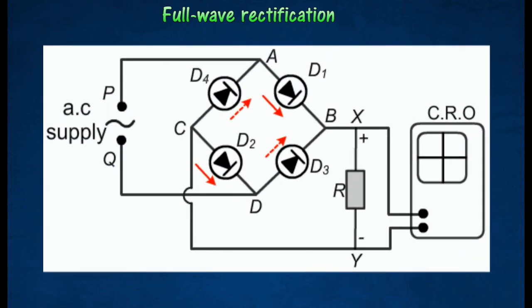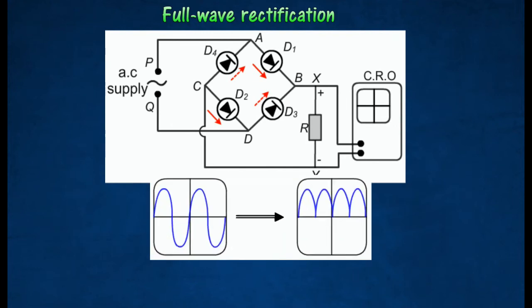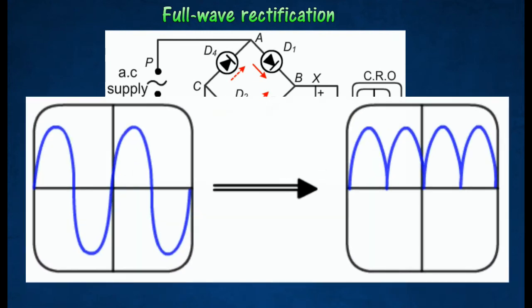The input is an alternating source, and the output is connected to the Y input of a cathode ray oscilloscope. The output voltage wave can be displayed on the cathode ray oscilloscope screen.